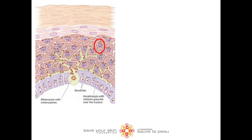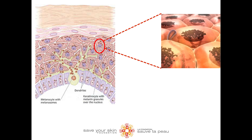The melanin accumulates right above the nuclei of the cells, which is what holds our DNA, thus protecting the DNA from UV damage. When we are exposed to UV radiation, our melanocytes will produce more melanin than normal to try and protect our skin cells, which darkens the skin's natural pigmentation. So when you get a tan, it's a sign that your skin is trying to protect its DNA from being damaged.